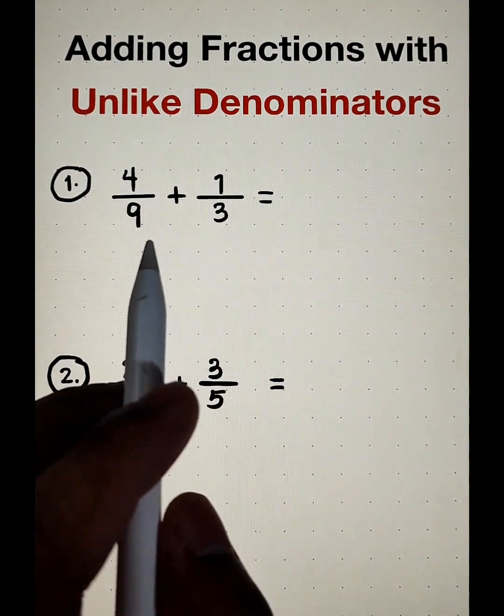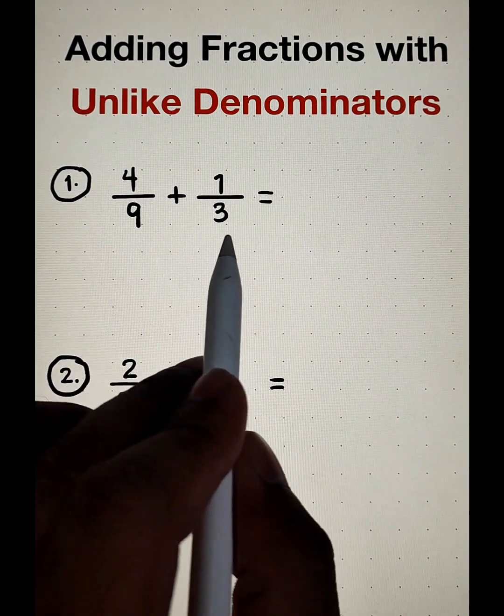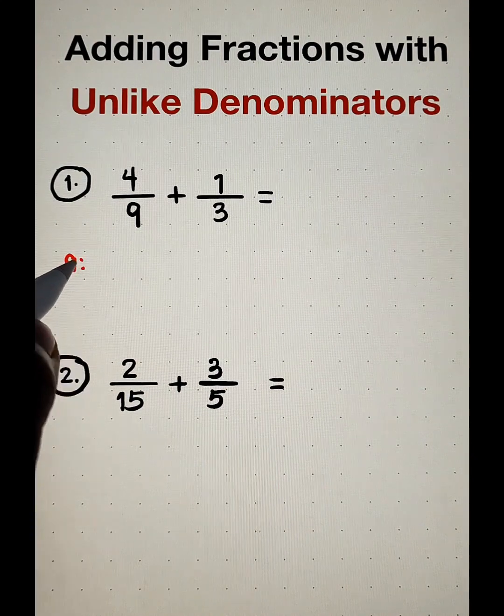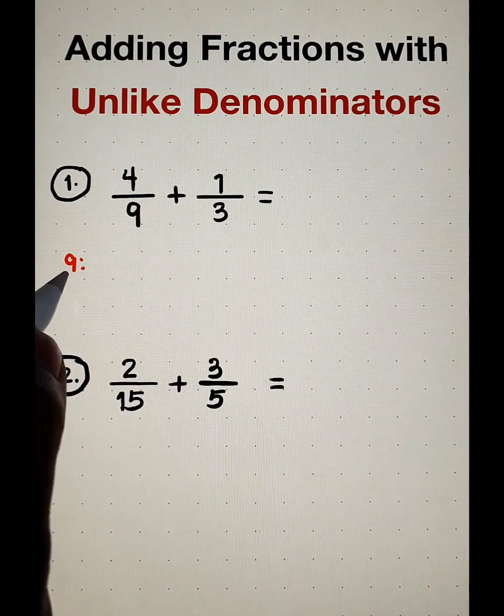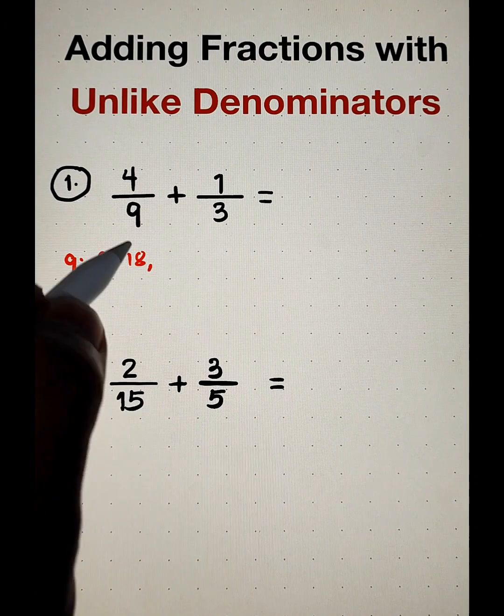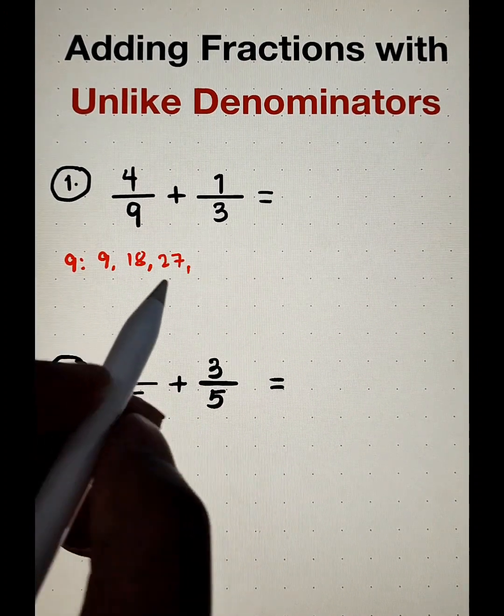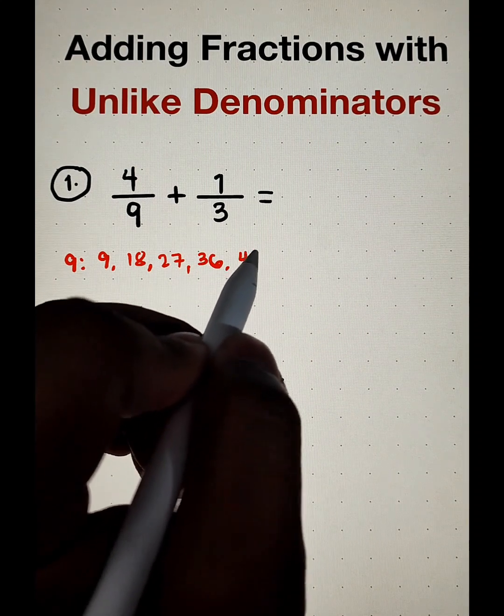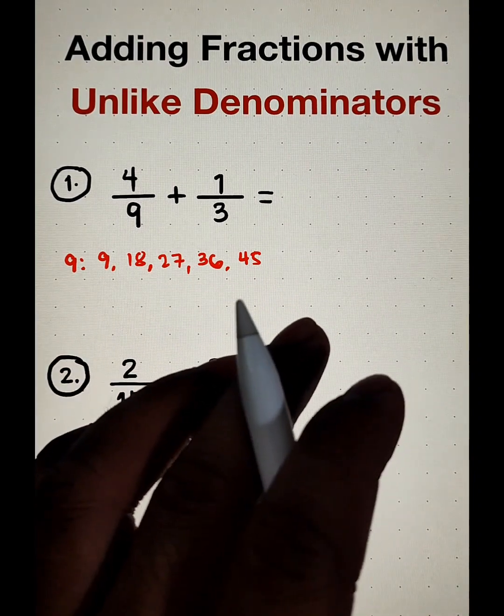And to find the LCD, we need to find the least common multiples of 9 and 3. Now let's start with 9. So I would suggest guys that you find first 5 multiples of each number. We have 9, 18, 27, 36, 45. If this is not enough, you can extend the multiples later.